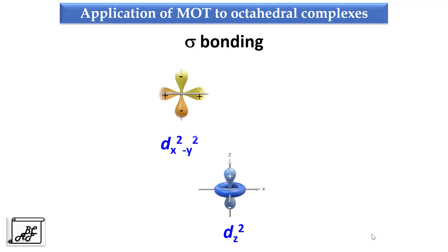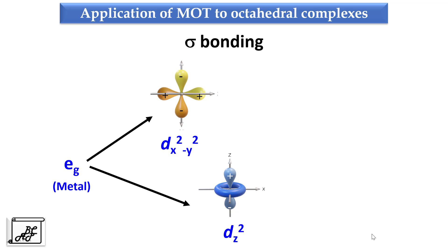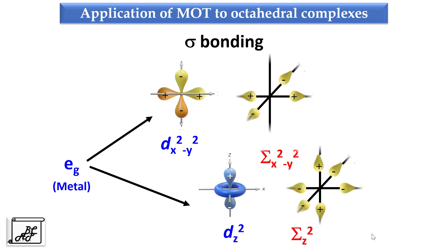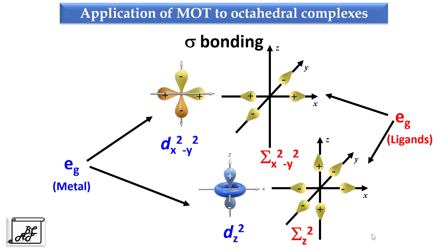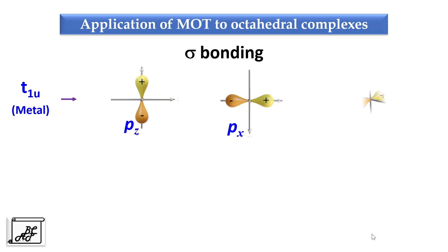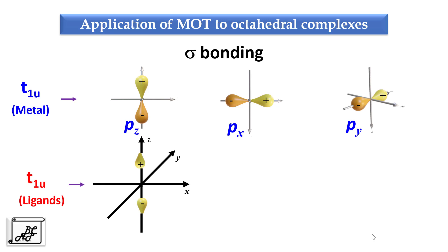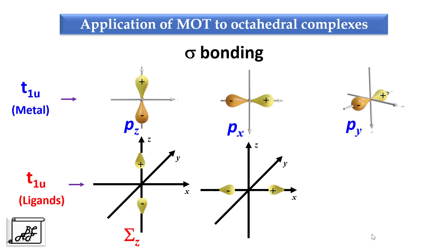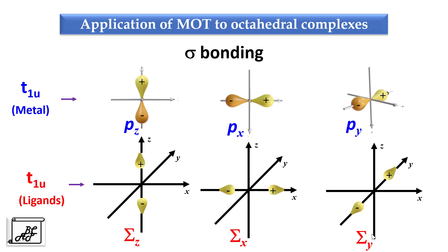In case of d orbitals, dx²-y² and dz² are termed as eg metal orbitals. E stands for doubly degenerate, meaning the energy level for these two atomic orbitals is the same. To overlap with these, there will be eg ligand group orbitals: Σ(x²-y²) and Σ(z²). In case of p atomic orbitals, pz, px, and py are termed as t1u metal orbitals, and the corresponding ligand group orbitals are t1u ligand group orbitals: Σz, Σx, and Σy.